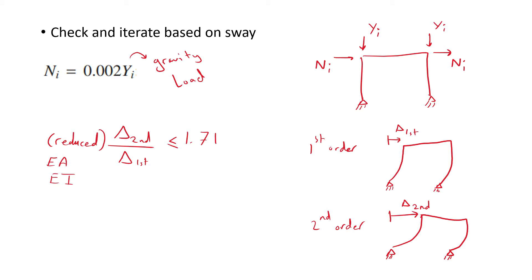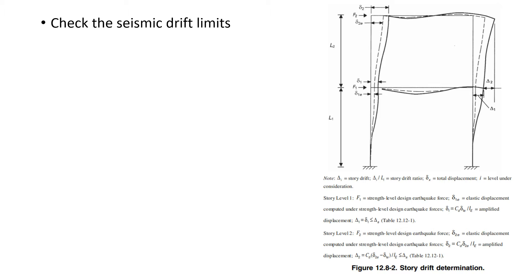If the additive notional lateral loads of 0.2% of gravity loads are not included in the lateral load combinations, as permitted by Step 4, confirm for each level of the frame that second-order sidesway effects — measured by the ratio of average second-to-first-order story drifts — are less than or equal to 1.71 based on a model using reduced member stiffness properties. If this limit is violated, notional lateral loads must be applied in addition to lateral loads in all lateral load combinations. If notional lateral loads are applied additively in all load combinations, this check may be skipped.